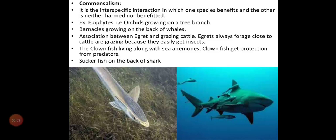Continuing our lectures on commensalism — this is also a population interaction. Here, species A will get benefit and for species B there is no benefit and also no harm, given as zero. It is an interspecific interaction, meaning between two species, in which one species benefits and the other is neither harmed nor benefited — no plus, no minus. An example is epiphytes.